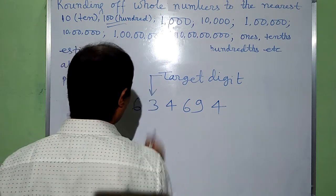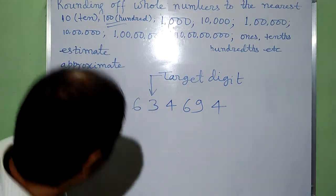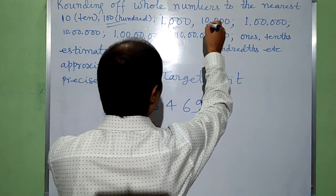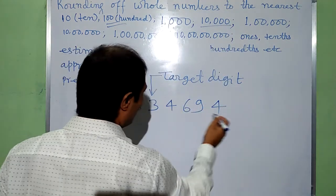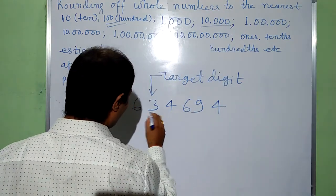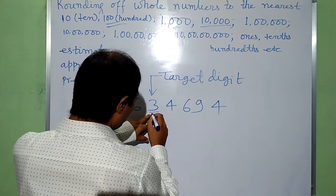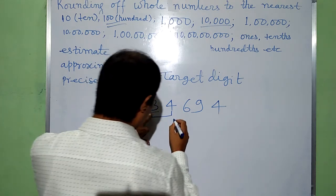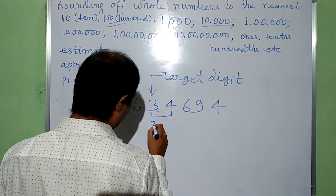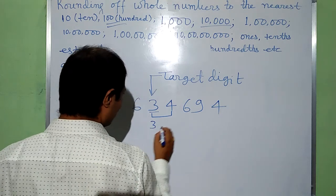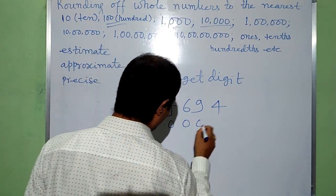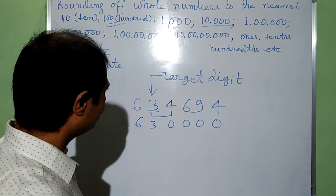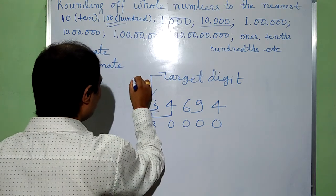Now, what if we have to round 34,695 to the nearest multiples of 10,000? The target digit is 3 at the ten-thousands place. We look just to the right of this digit, that is 4. Since 4 is less than 5, we need not change the target digit. It remains as 3, the rest of the digits to the right are changed to 0, and the digit to the left remains as it is.